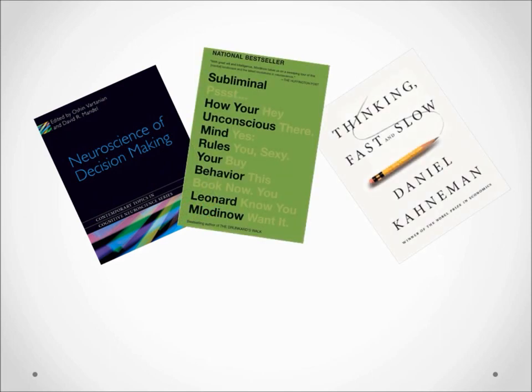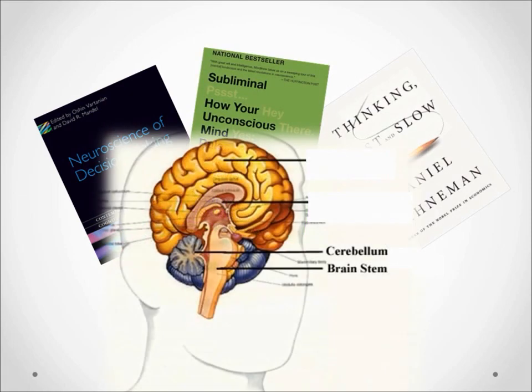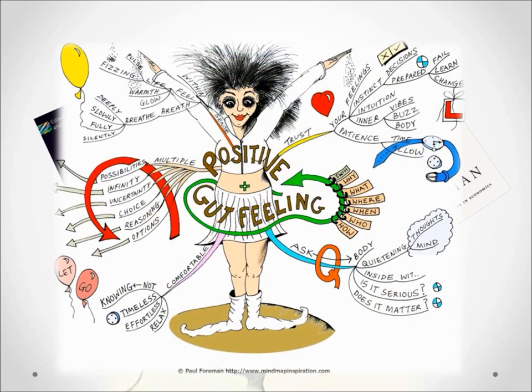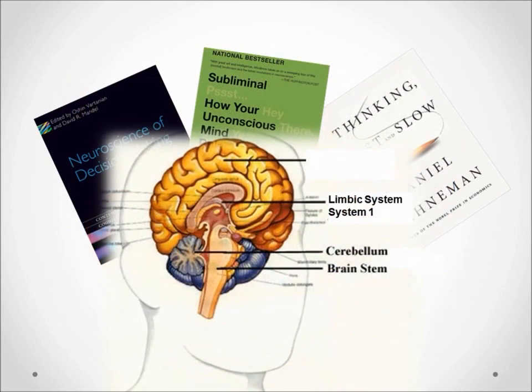Researchers in the area of decision making have broken down how the brain processes information into two modes. System One is intuitive — it resides in the limbic part of the brain, where value judgments are made based on past agreeable or disagreeable experiences, often unconsciously. This is where "from the gut" decision making takes place, and also where the fight-or-flight instinct resides. System One operates automatically and quickly, with little or no effort and no sense of voluntary control.